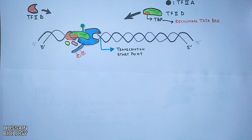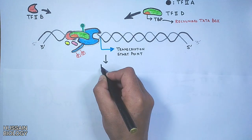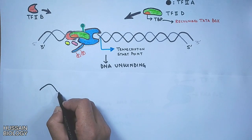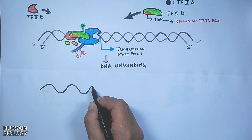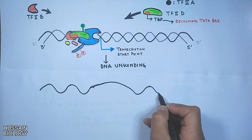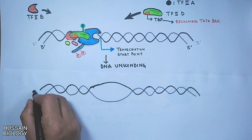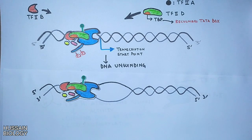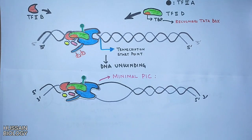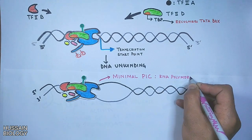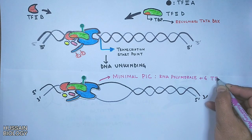Getting back to the mechanism of transcription — unwinding has occurred due to transcription factor TF2H, giving us the open form of DNA as shown in the diagram. The assembly of RNA polymerase 2 with the six general transcription factors constitutes the minimal pre-initiation complex, or minimal PIC.